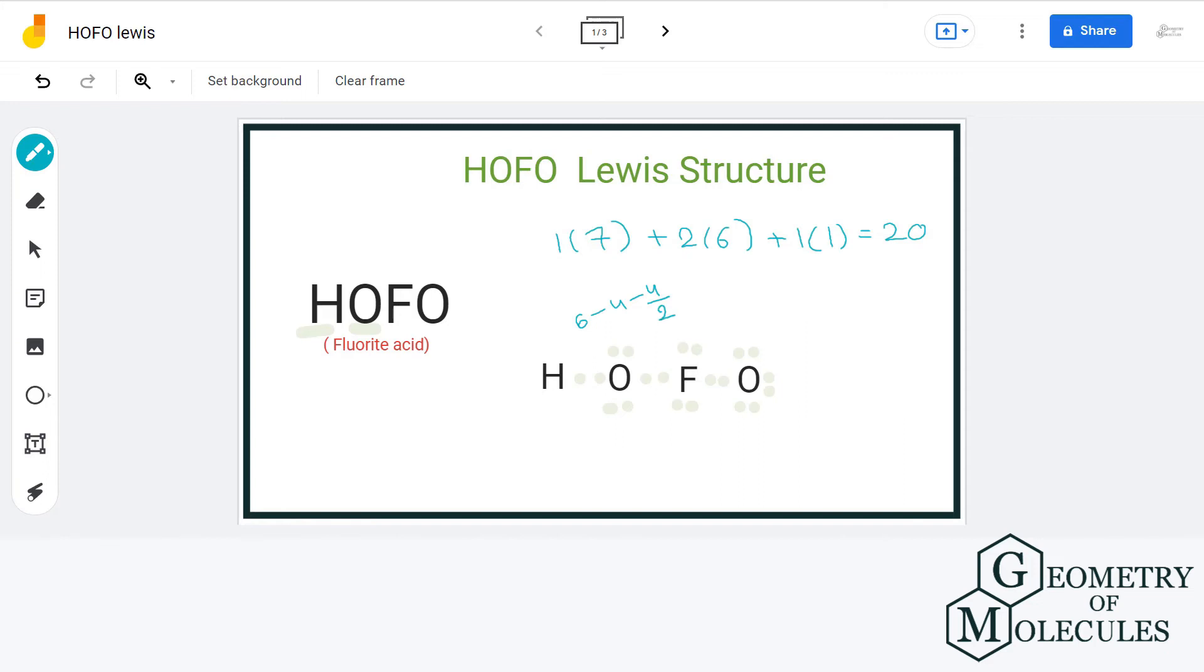For fluorine, we have seven valence electrons minus four non-bonding electrons minus four bonding electrons divided by two, giving us a formal charge of plus one.